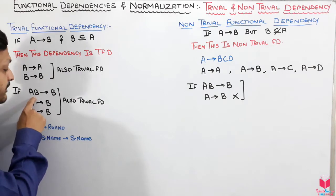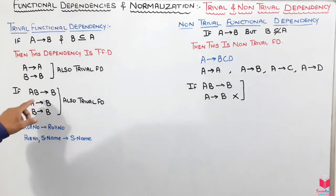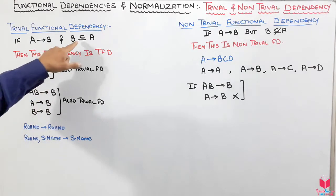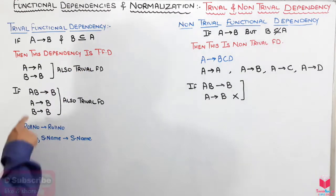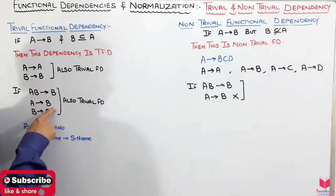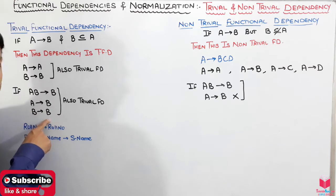AB, if we have given this functional dependency A or B is determined with A and B, but there is a condition that B is also the subset of A, then we can say that we can find from A to B also and B to B will also be there, always be there.